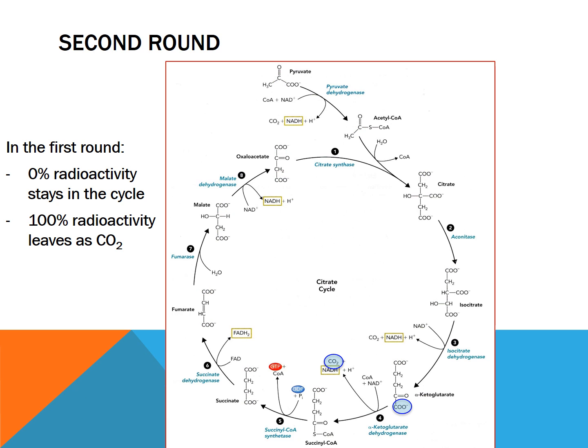Now when you start the second round, both of the carboxyl carbons of citrate are going to be radioactively labeled. We see that in the first decarboxylation step, one of them is going to leave completely — so here we lose 50% radioactivity. Then once we get to the next step, that carboxyl carbon is going to leave as CO2, so another 50% is lost. Unlike carbon one of glucose being radioactively labeled, this is the end of the radioactivity. Up to the second round is when we stop seeing radioactivity at all for carbon two.